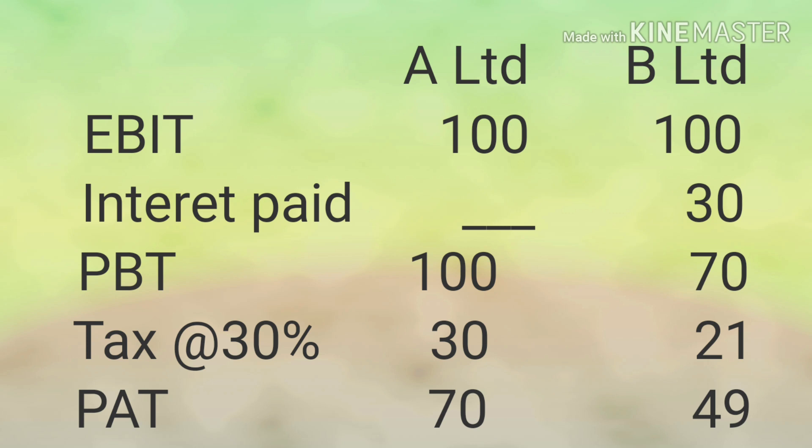Just because B Limited paid Rs. 30 as interest, they got a reduction in tax. The reduction in tax is 30% of the Rs. 30 paid as interest, which works out to Rs. 9. The difference in profit after tax is Rs. 21, which is 30 × (1 − tax rate) = 30 × 70% = 21. So the tax savings equals interest × tax rate (30 × 30% = 9), and the after-tax cost equals interest × (1 − t), that is 30 × 70% = 21.